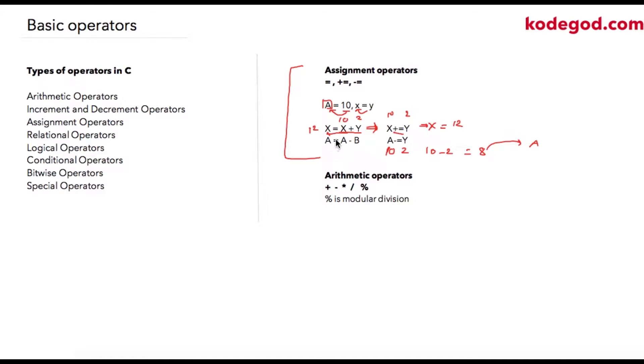Apart from assignment operators, we also have arithmetic operators. So plus minus instead of multiplication like X, we use star operator in C as a multiplication operator, then division and then modular division as well.